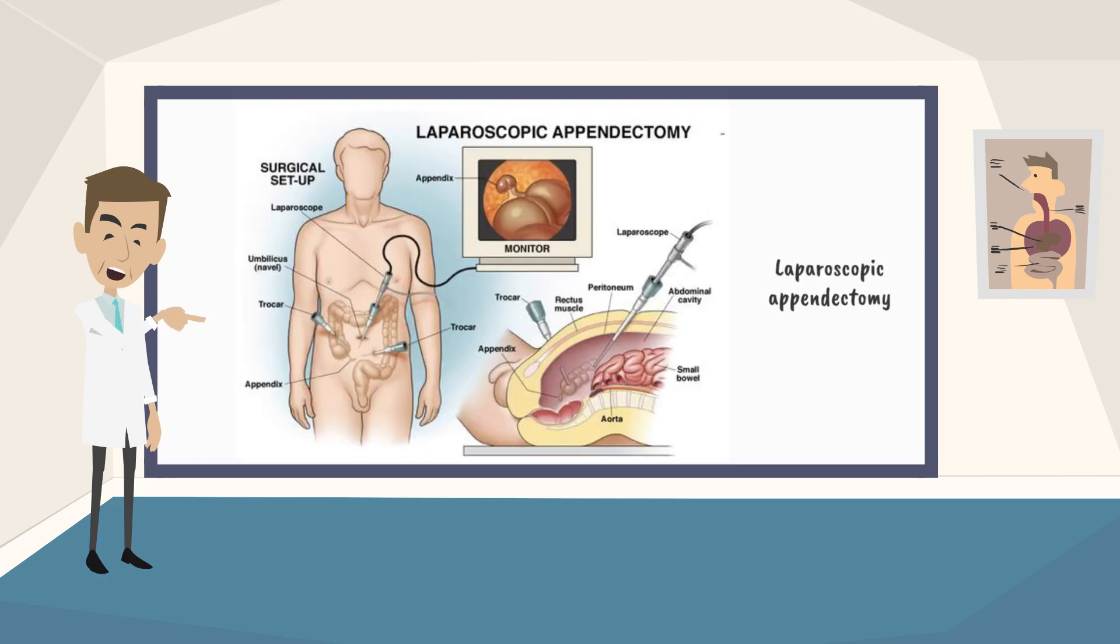And the second way is laparoscopic surgery. During laparoscopic surgery, the doctor makes a few cuts that are much smaller than those used in open surgery. Then he or she inserts long, thin tools into the belly. One of the tools has a camera, called a laparoscope on the end, which sends pictures to a TV screen. The doctor can look at the image on the screen to know where to cut and what to remove. Then he or she uses the long tools to do the surgery.